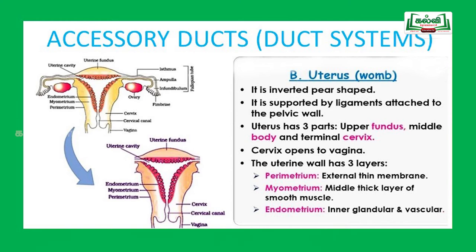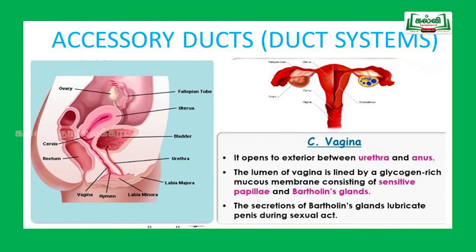The vagina opens to the exterior between the urethra and the anus. The inner lining of the vagina is lined by a glycogen-rich mucus membrane consisting of sensitive papillae and a Bartholin's gland. The Bartholin's gland lies in the vagina and secretes a mucus substance which lubricates the vagina during sexual intercourse.